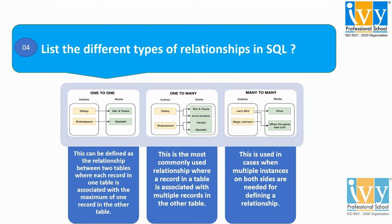Coming to the next one — one to many. This type of relationship is something where a record in a table is associated with multiple records in another table. Here also we have two tables, author and book, and a particular author is associated with more than one record in the book table.